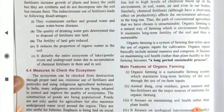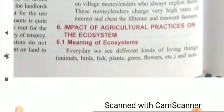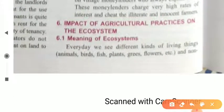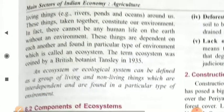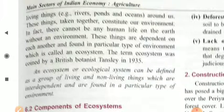Our today's topic is the impact of agriculture practices on the ecosystem. Before starting this topic, we have to understand what an ecosystem is. In our everyday life, you see so many living and non-living things which live together and are totally dependent upon each other. They constitute an environment, and this particular environment creates our ecosystem. So ecosystem is the summation of living and non-living things which live in a particular place or environment.